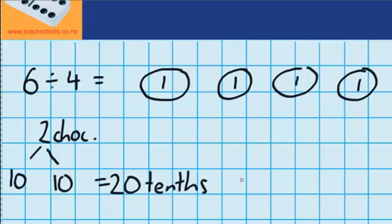So now I use my division facts. What is 20 shared between 4? And I know the answer to that is 5 so that means I can give each of these people 5 more tenths.